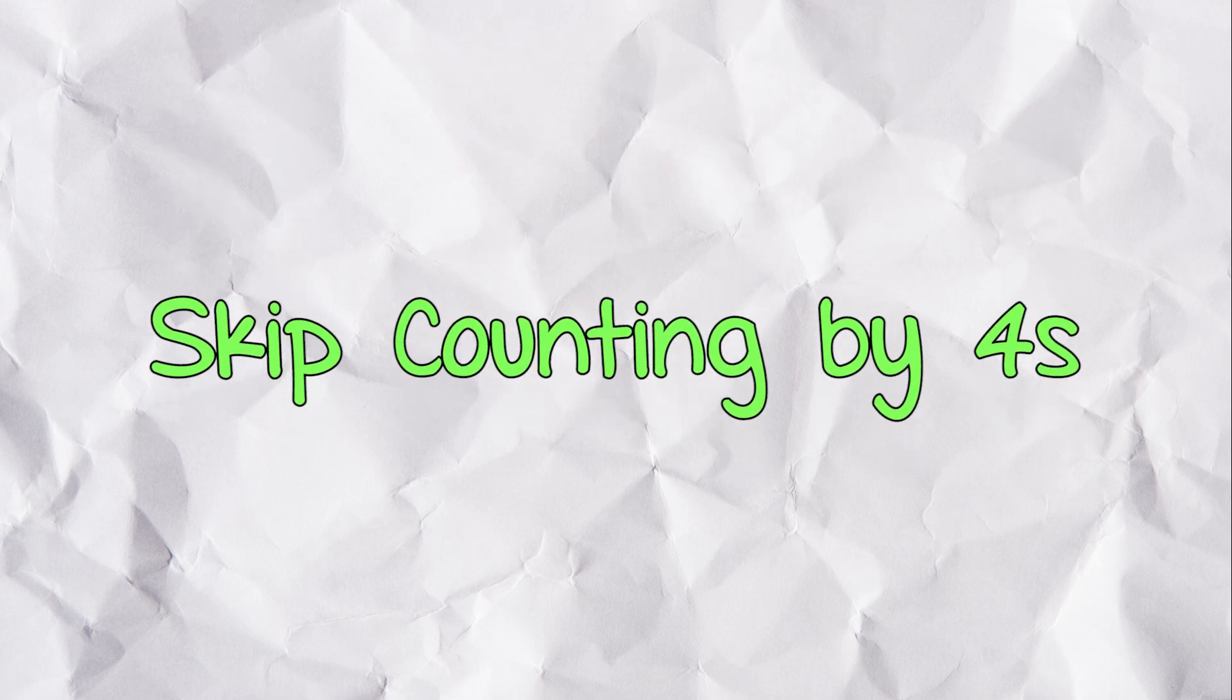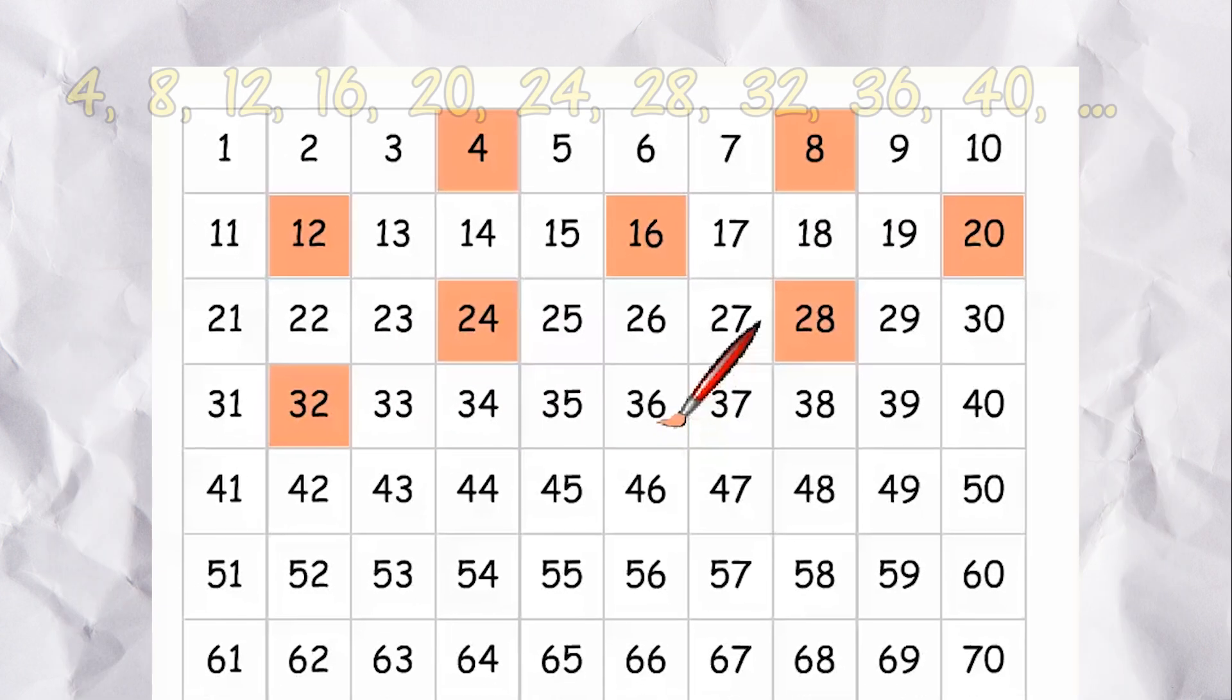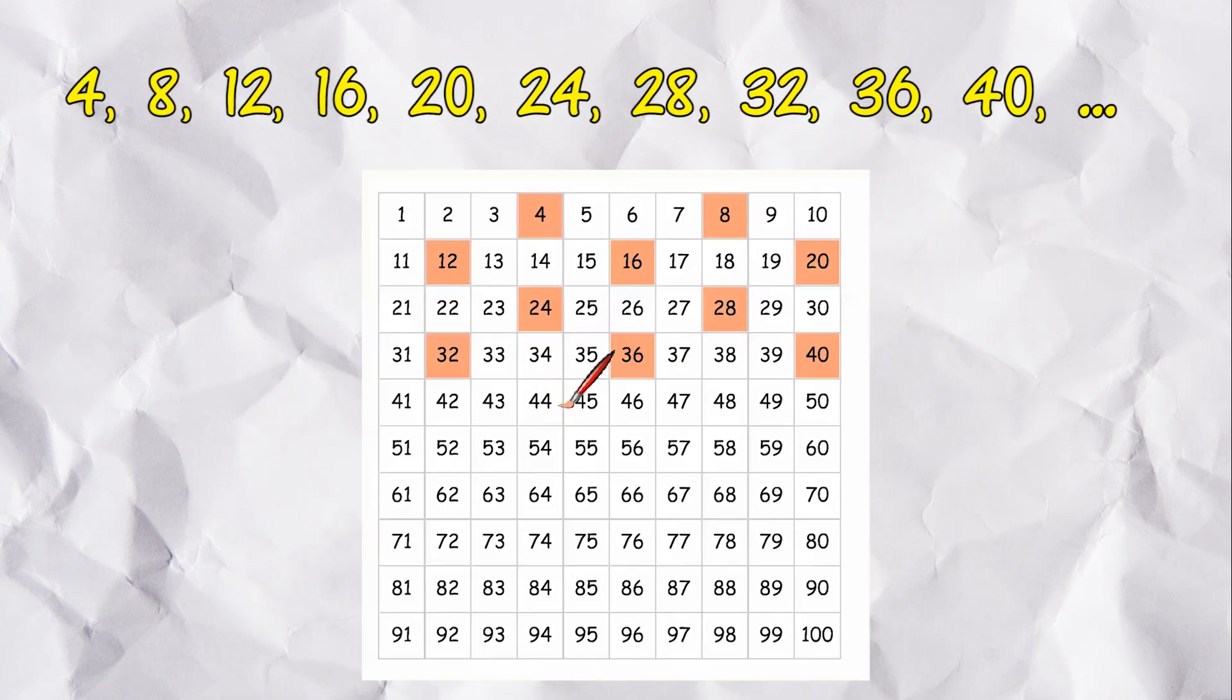Skip counting by 4s is 4, 8, 12, 16, 20, 24, 28, 32, 36, 40, and so on.